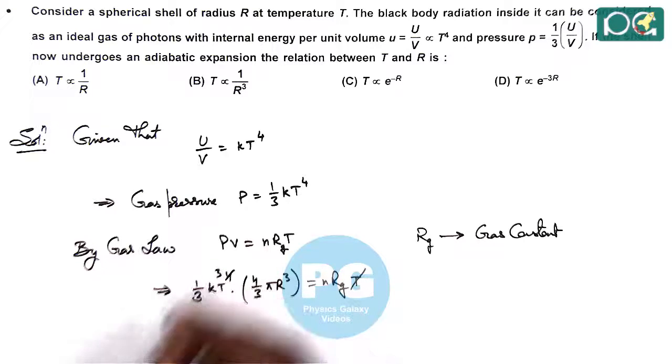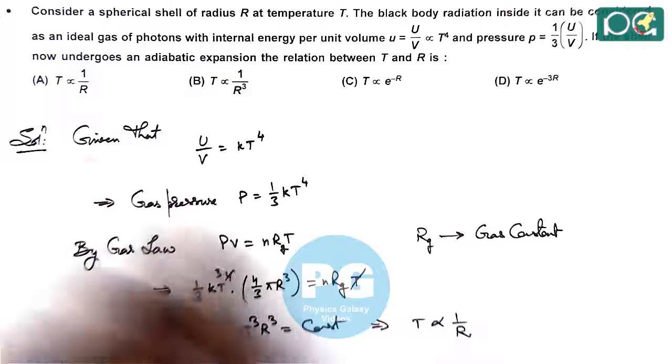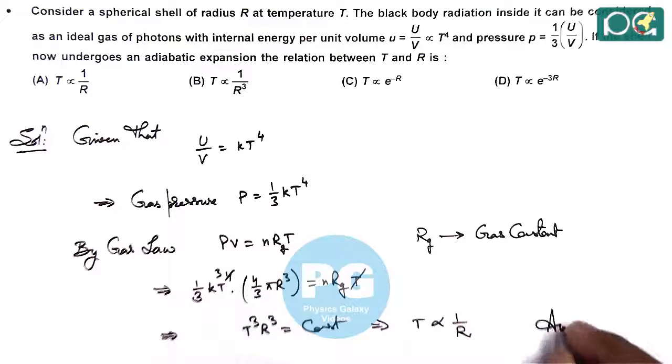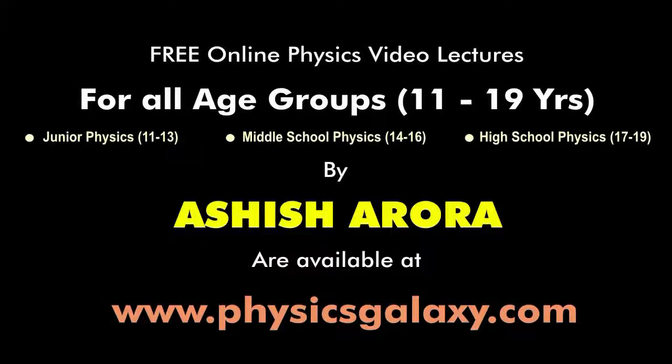Here T gets cancelled out and we can see T cube R cube is coming out to be a constant. Or this gives temperature is inversely proportional to the radius of the shell. So it matches with option A. So we consider the answer to this question as option A.